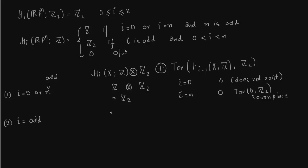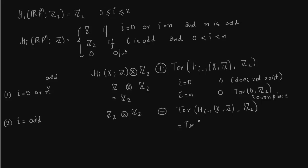Case 2: i is odd. Then Z2 tensor Z2 = Z2, since the greatest common divisor of 2 and 2 is 2. For the Tor term, since i is odd, i - 1 is even, and for even dimensions H_i(RP^n, Z) = 0. So the Tor term is 0, and the first part gives Z2. The result is Z2.